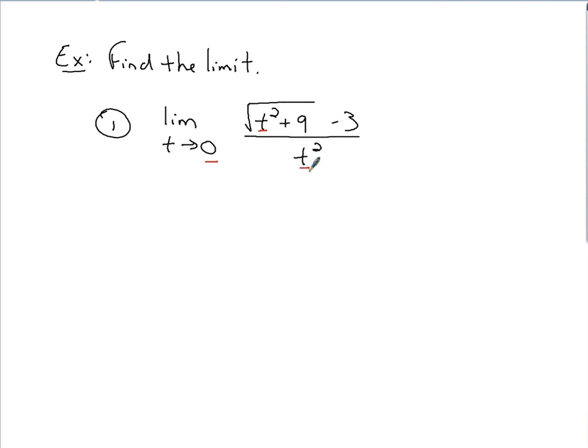Now, factoring is really not a way to go with this problem. If we have roots involved, what we should use as an approach is conjugates. So take the root portion of this, being the numerator. Take the conjugate of that. So the conjugate of that would be the square root of t squared plus 9. And since this is minus 3, the conjugate would be plus 3. Multiply that conjugate to the numerator and denominator.